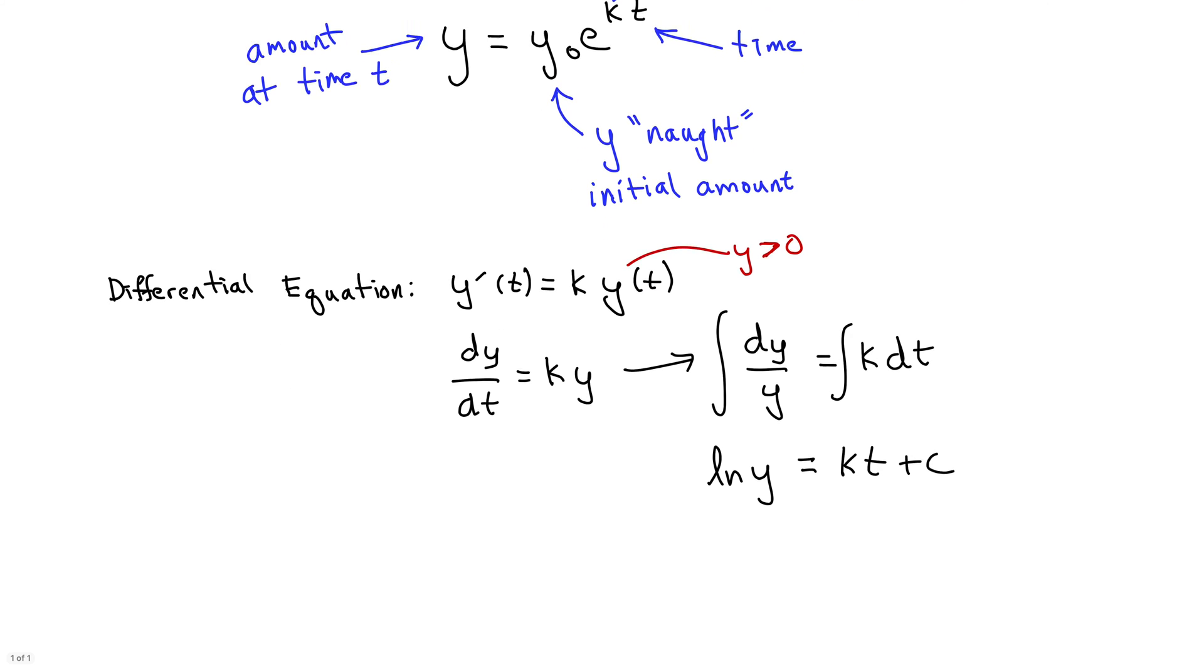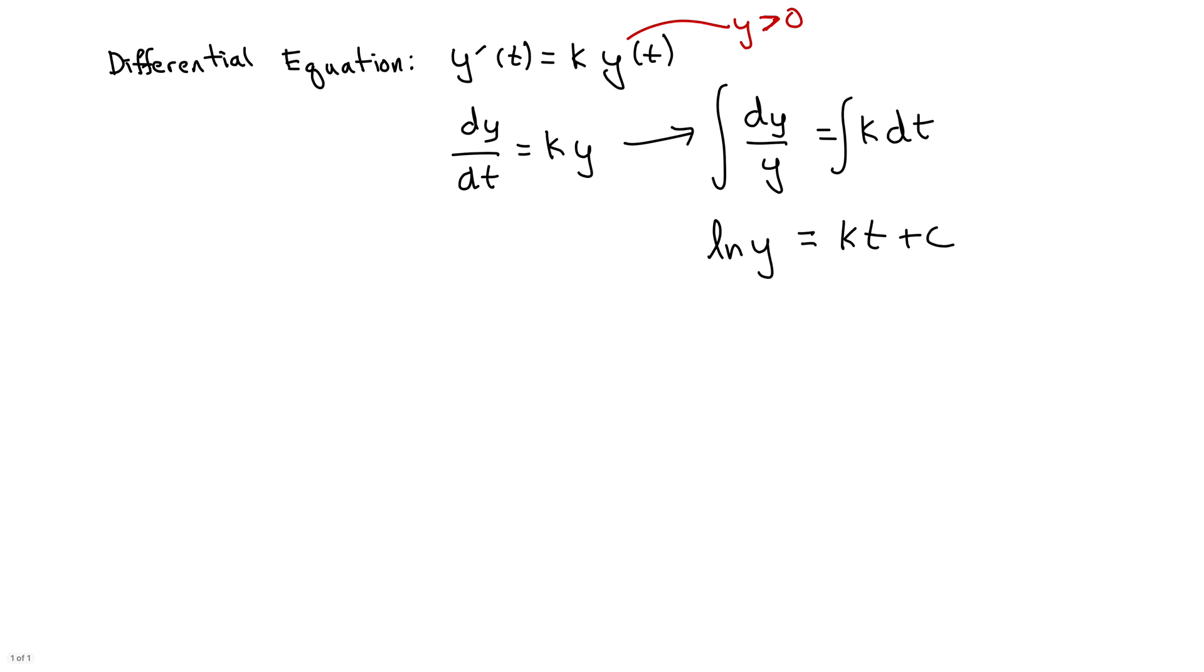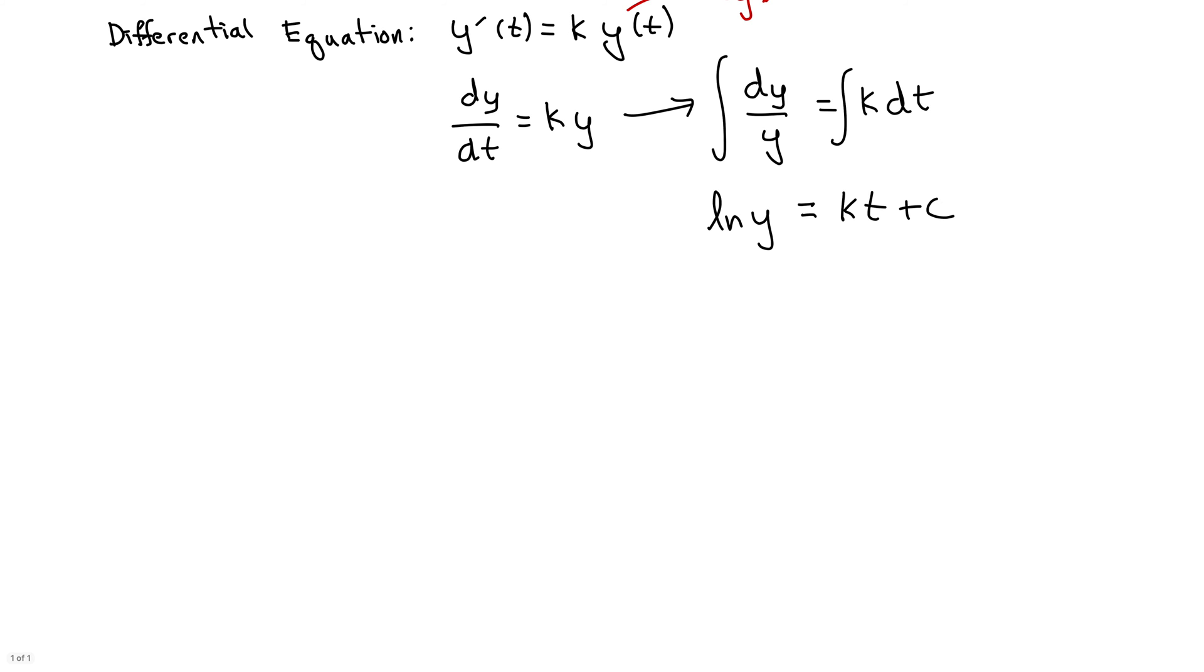Okay, well, this is progress. Now let's just solve this thing for y. So doing that, we'll take both sides base e, essentially. So we have e here and e here. So that gives us y, the e and the natural log undo each other, equals e to the kt plus c.